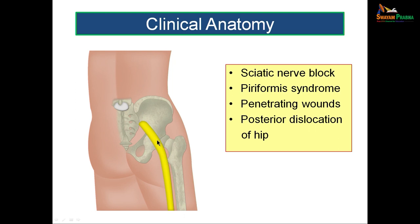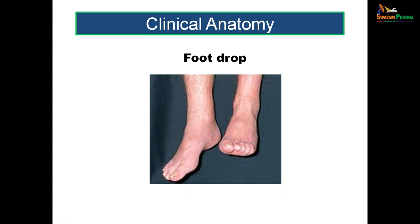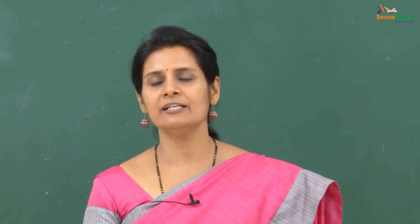Posterior dislocation of the hip joint can stretch the sciatic nerve, since the hip joint with the obturator externus is a posterior relation of the nerve, resulting in sciatic nerve injury. Injury to the sciatic nerve or its terminal branches — particularly the common peroneal nerve — can result in foot drop, where the foot is plantar flexed. This occurs because the deep peroneal nerve supplies the muscles of the anterior compartment acting as dorsiflexors, and without dorsiflexion, foot drop results.